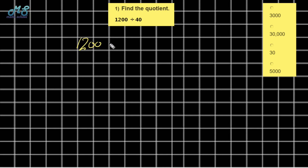1200 divided by 40 — how can we find the quotient? Just keep your eye on the zeros. We have double zero and one zero. First step: cancel one zero. Now the main fact — ask yourself: 12 divided by 4 is equal to what? It's equal to 3. How many extra zeros do we have? Just one zero, so put down zero.